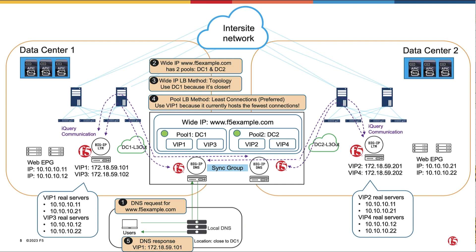F5 Big-IP DNS provides Tiered Global Server Load Balancing. It resolves a DNS request for a fully qualified domain name (FQDN), also known as the virtual IP, and returns an IP address of a virtual server — also known as a VIP — that can reside across data centers.